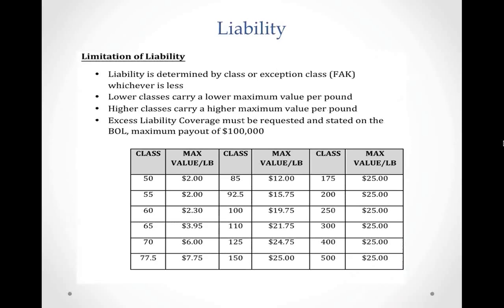Shifting to limitation of liability: the maximum liability per pound per package is determined first by determining the actual class as provided in the governing tariff or the FAK rating as set forth in the shipper's published tariff, then by locating the applicable class and corresponding maximum liability in the carrier's rules tariff. This example is pulled from R&L's rules tariff — it varies from carrier to carrier. Typically your lower classes carry a lower maximum value per pound, and higher classes carry a higher maximum value per pound.